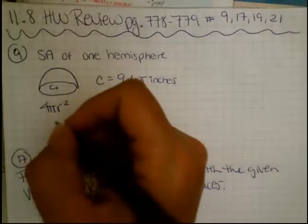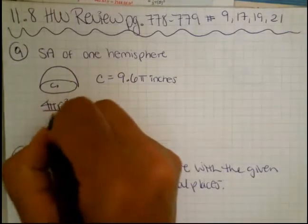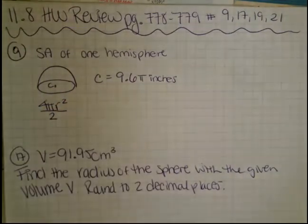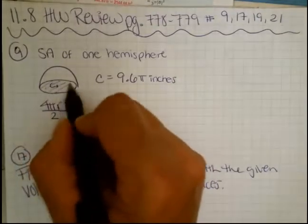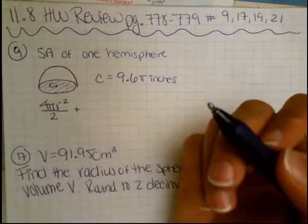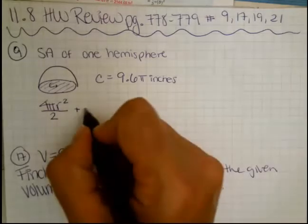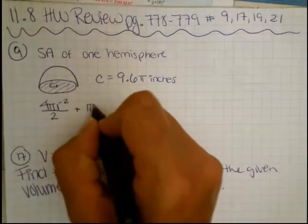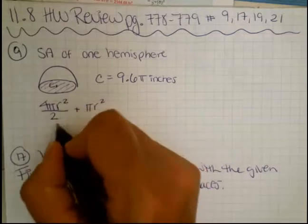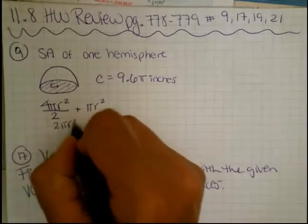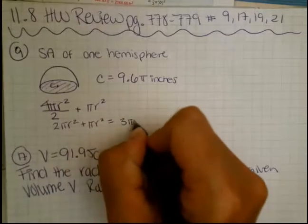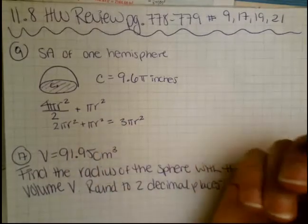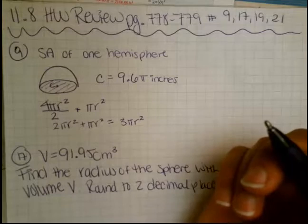So for a hemisphere, we divide that in half because it's half of that, and then we have to add in the surface area of a circle because of the base being included now in the surface area. So pi r squared. 4 pi r squared divided by 2 is 2 pi r squared plus another pi r squared is going to give us 3 pi r squared. That's the formula we would use for the surface area of a hemisphere, 3 pi r squared.